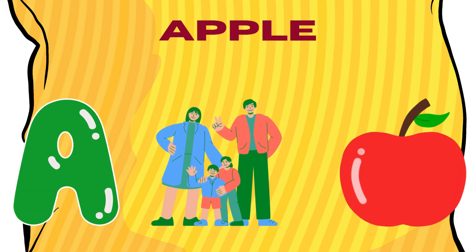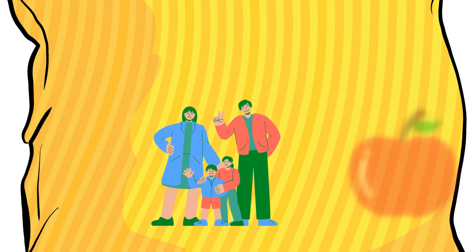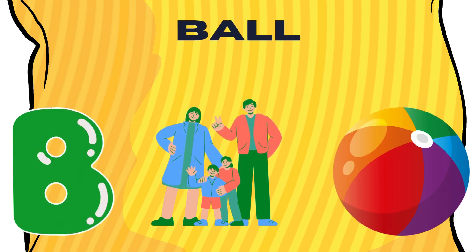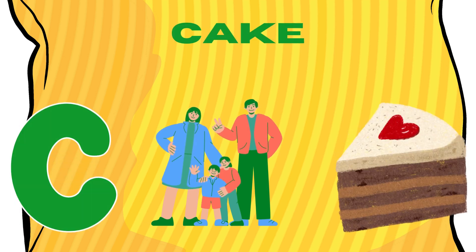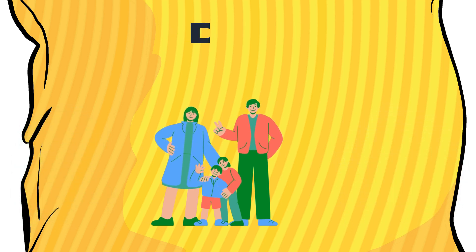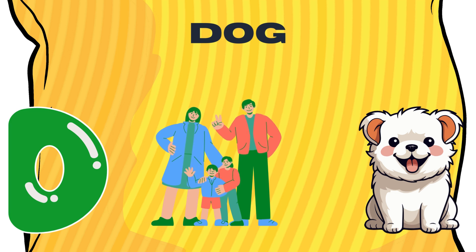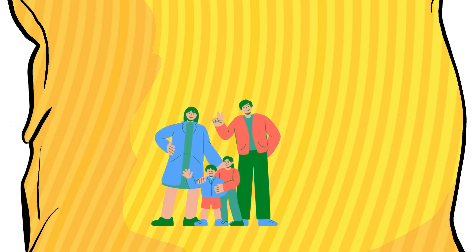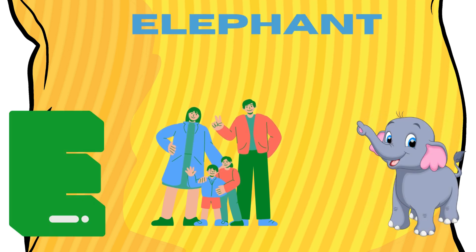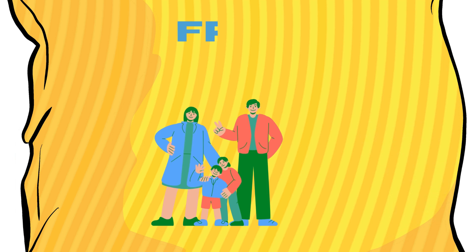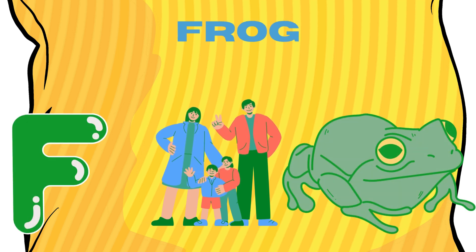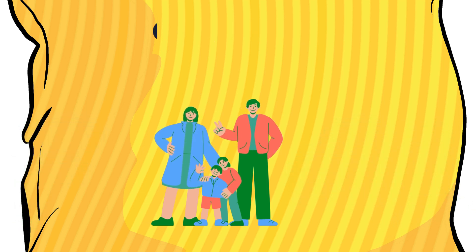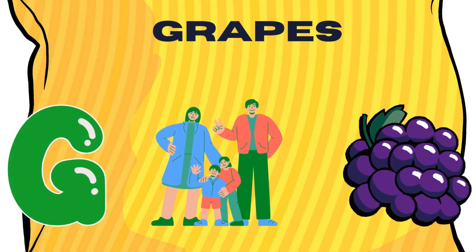A for apple, B for bun, C for cake, D for dog, E for elephant, F for frog, G for grapes.